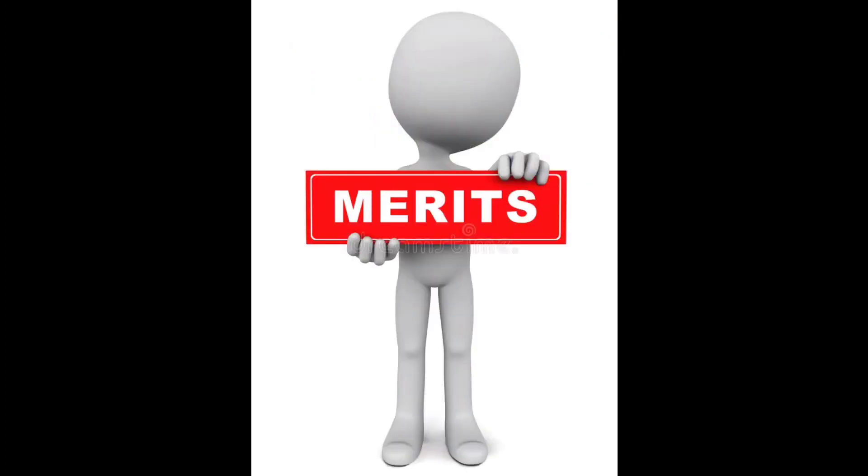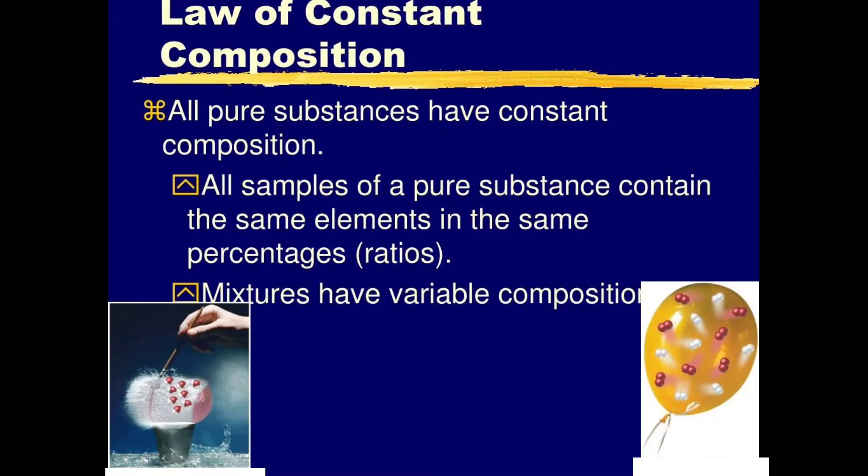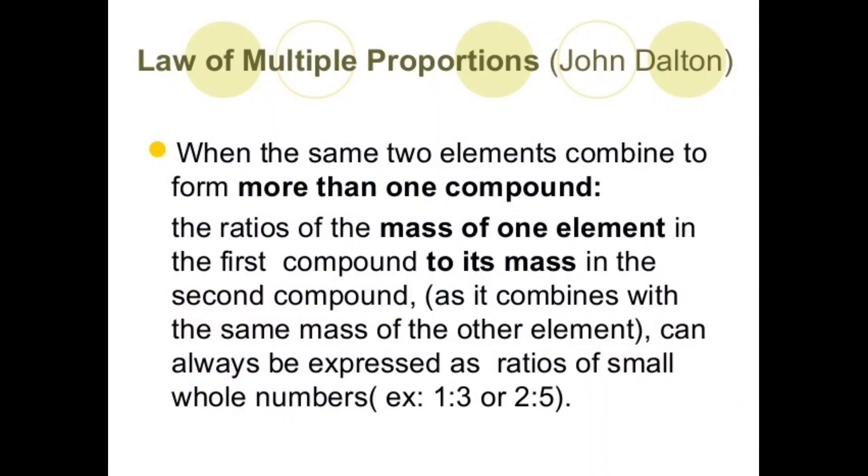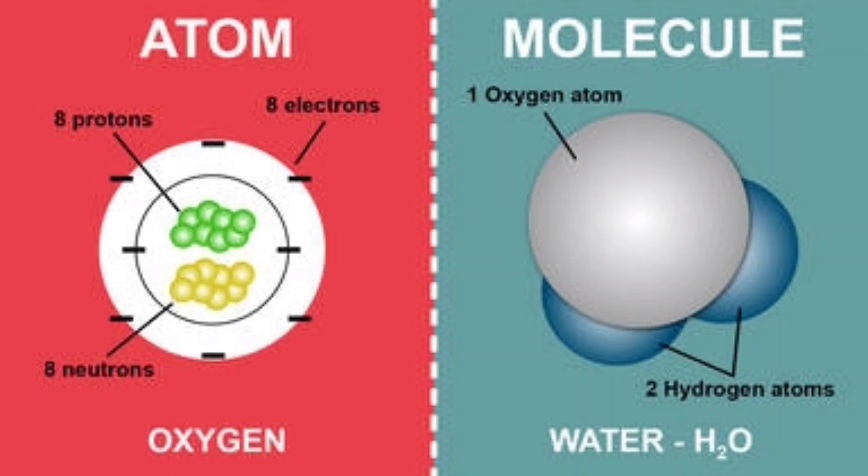After all these drawbacks, the merits of Dalton atomic theory are: The atomic theory explains the laws of chemical combinations like the laws of constant composition and the law of multiple proportions. Number 2. Dalton was the first person to recognize a workable distinction between the fundamental particle of an element, that is atom, and that of a compound, that is molecule.